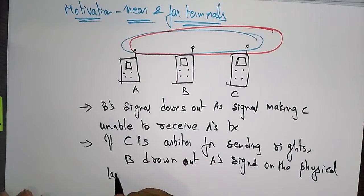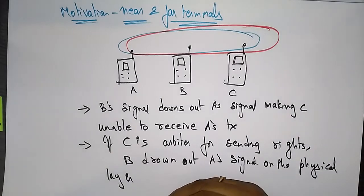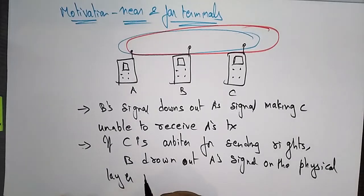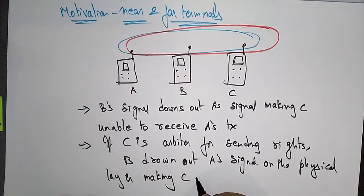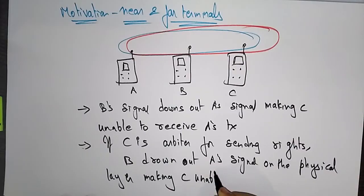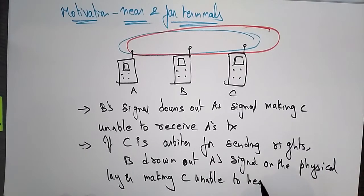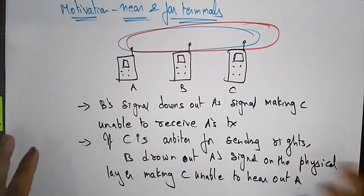B drowns out A's signal on the physical layer, making C unable to hear A. This is the near and far effect.